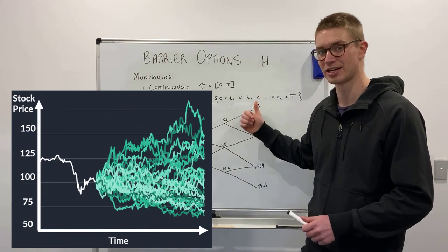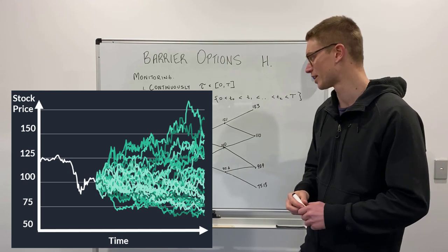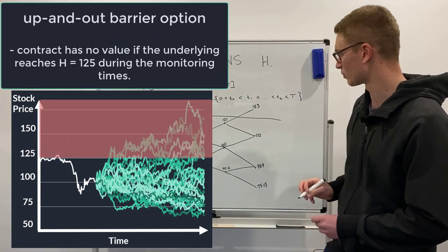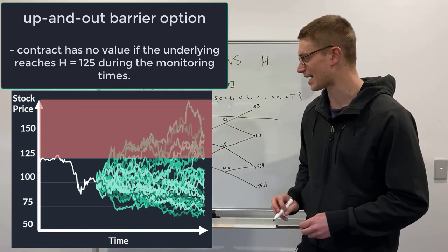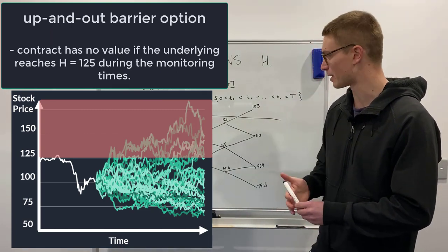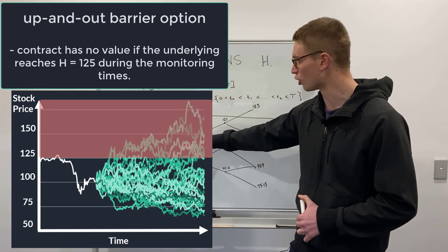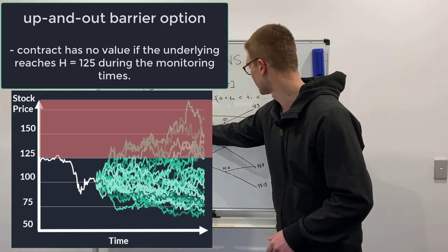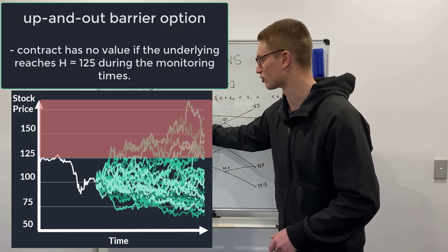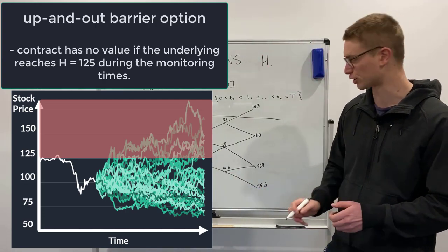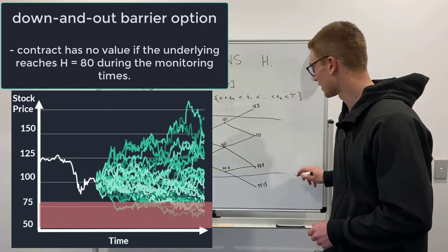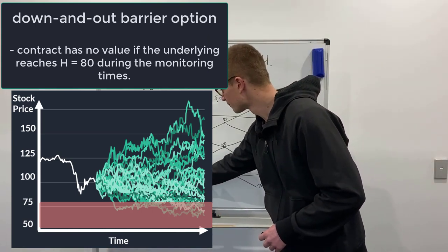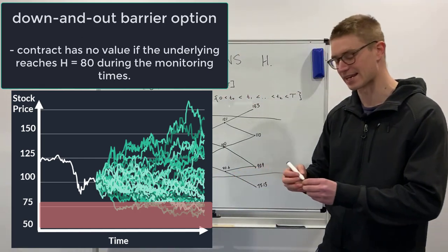There are up-and-out barrier options and down-and-out barrier options. Essentially the difference between them is just as you can represent with this tree. If we have a stock price today at 100, an up-and-out barrier option would be knocked out after that barrier H is hit — say at 125. For a down-and-out barrier option it would be the opposite, with a level chosen at, say, 80.